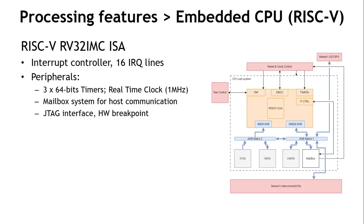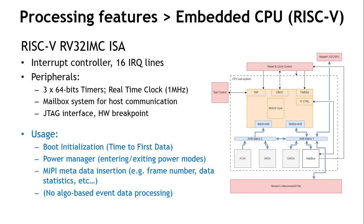There is a RISC-V CPU on the chip that can run custom microcode. It is used for system initialization to reduce time-to-first-data at power-up, for power management to shift between different power modes, and to insert metadata into the event stream such as trigger data, data statistics, frame numbers, and identifiers. The CPU does not process actual event data — it doesn't have access to the full event stream — but it receives statistical data from hardware blocks along the pipeline.